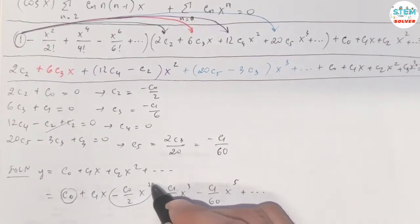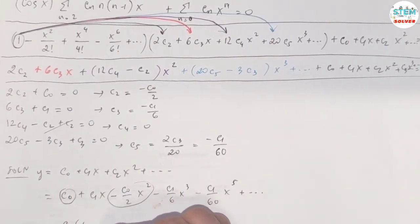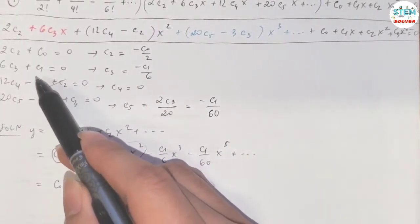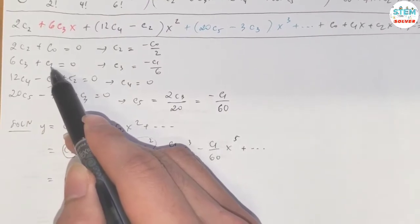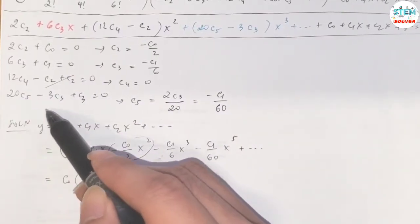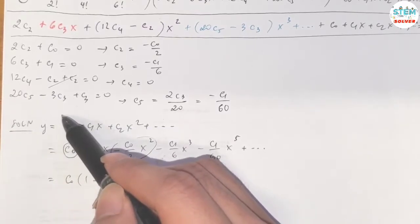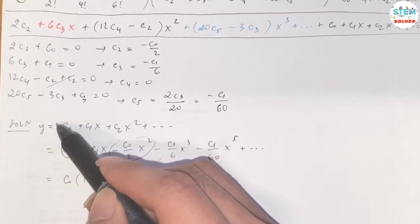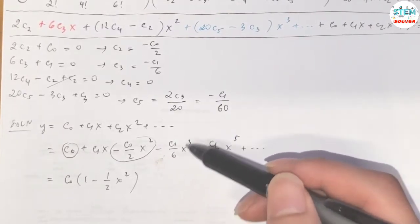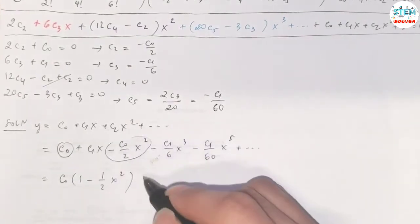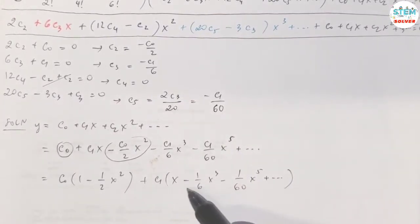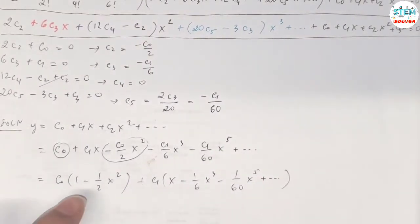So take a look at the c_0 terms and factor it out. I'm gonna explain why I don't plus dot dot dot here. If you notice, we have a pattern here. C_3 from c_1, c_4 from c_2, c_5 from c_3, and the next one will be c_6 from c_4. C_6 will be in terms of c_4, and c_4 is 0. The next one will be c_7 from c_5, and c_7 will be in terms of c_5, and c_5 is in terms of c_1, so c_7 will be in terms of c_1. The rest of the power series will be in terms of c_1. That's why we have only two terms for c_0. Then for c_1 we have x minus 1 over 6 x cubed minus 1 over 60 x to the fifth plus dot dot dot. This is your final solution. That's it.